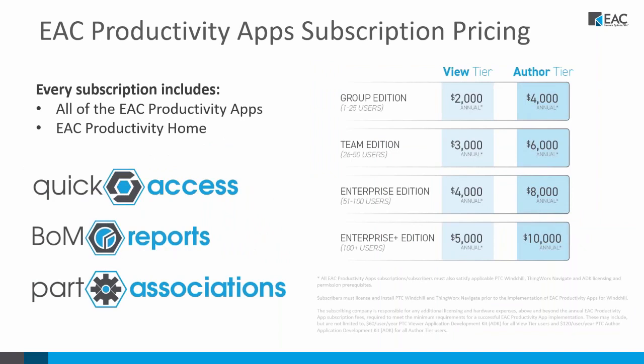Just a quick note on the subscription pricing. We made it very simple. We have a price based on number of users, and the difference between the two tiers is whether you're going to be just a view-and-print type of user, or a view, edit, and author type of user. This gives you access to all the EAC productivity apps. It also gives you access to the EAC productivity home. This is a very simple pricing model.